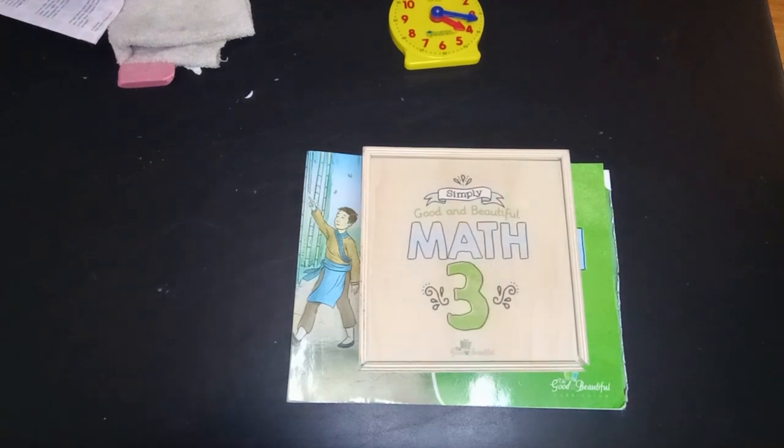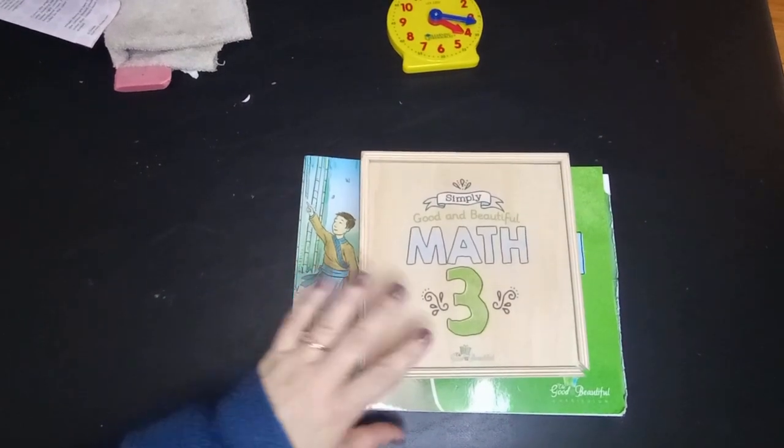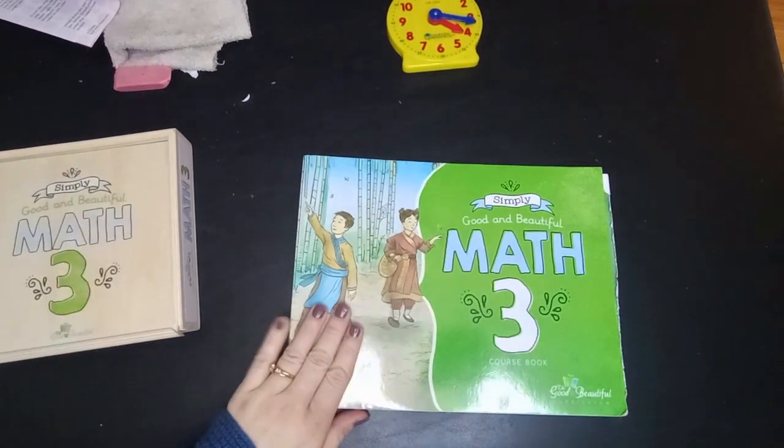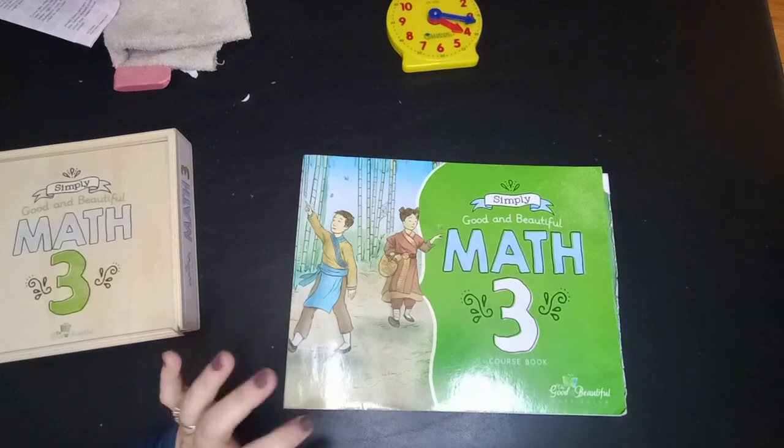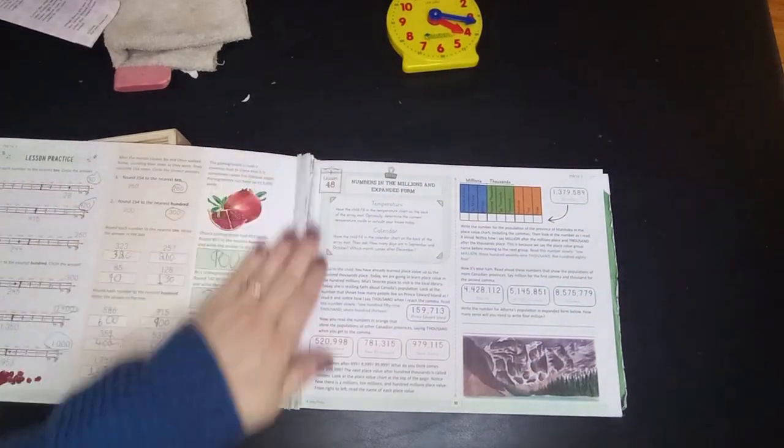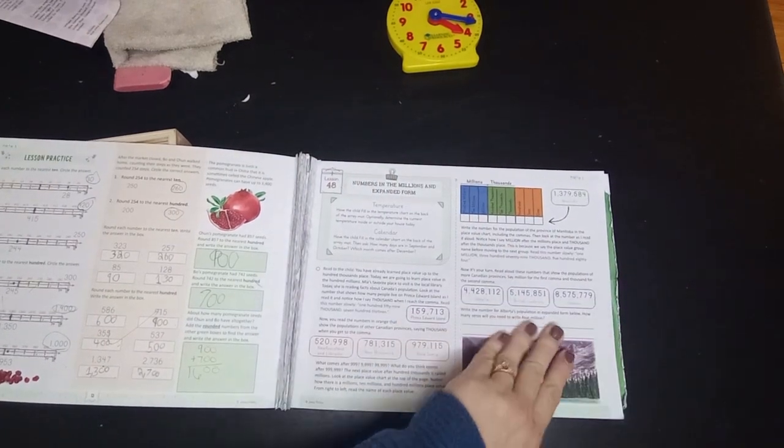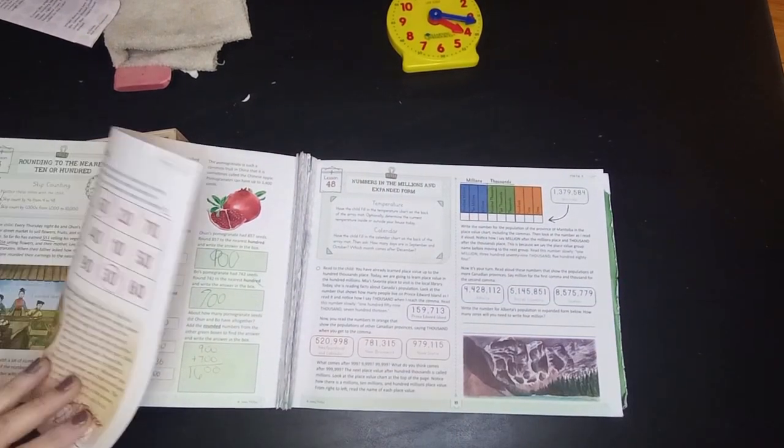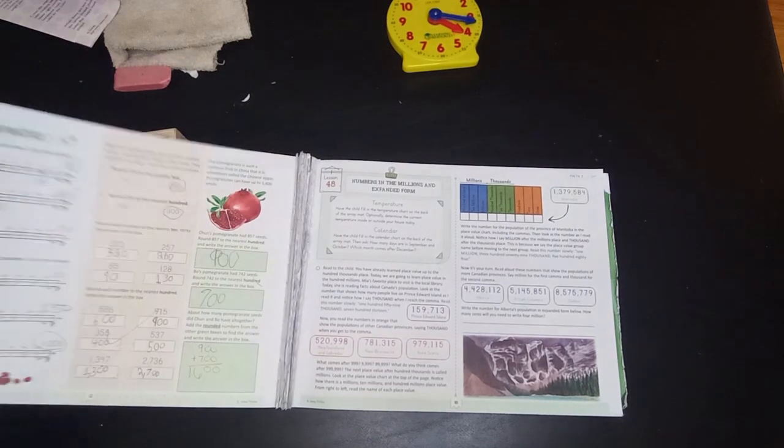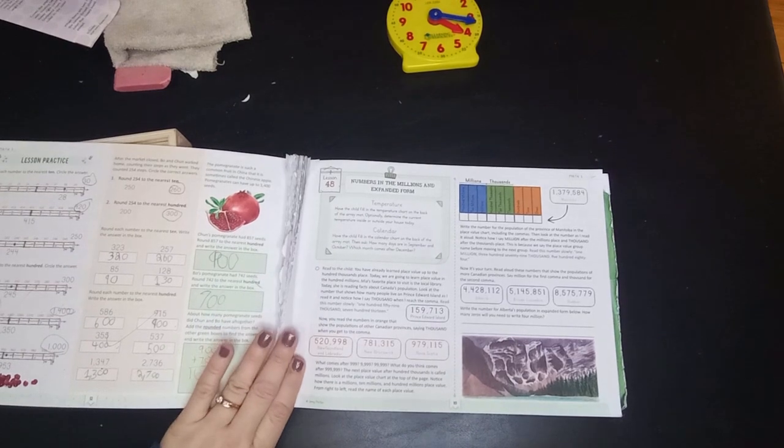So, I have used every level of the Good and the Beautiful Math, so I can give a wide variety of opinions and thoughts on it. It comes with a book. I do not love the layout of this, I do not love the binding of the book, so you will see that we are tearing pages out as we go. I'll only be able to show you what's left, I have the rest of the pages in the box, but I can show you the beginning lesson because it's still in here.